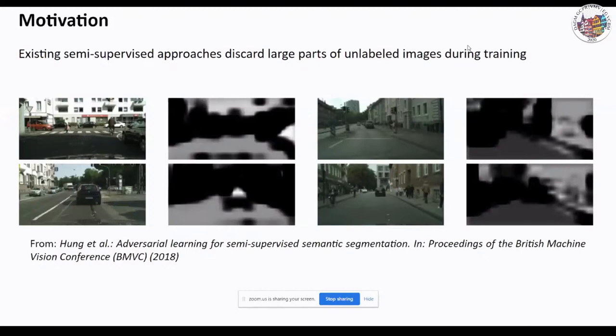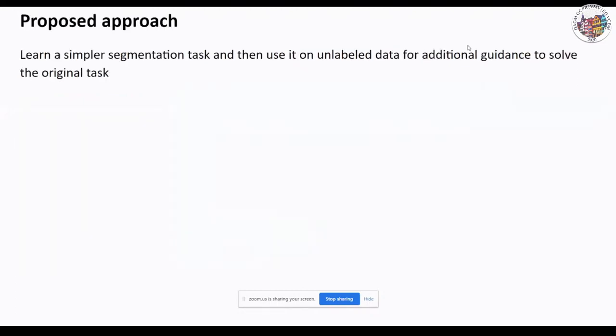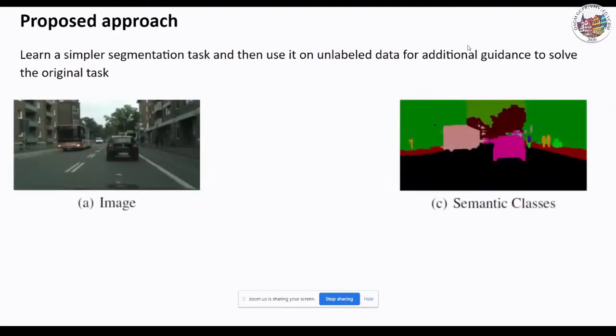Existing semi-supervised approaches incorporate unlabeled images into training by using the regions that are easy to segment — in other words, which have higher predicted confidence scores. But there are many regions which are harder to segment, and thus large parts of images get discarded during training. In our work, we propose an approach that doesn't discard any information. The key observation is that the difficulty of the semantic segmentation task depends on the definition of the semantic classes.